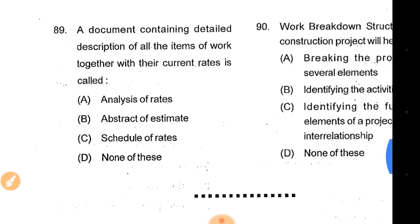Question 89: A document containing a detailed description of all items of work together with their current rates is called the schedule of rates.